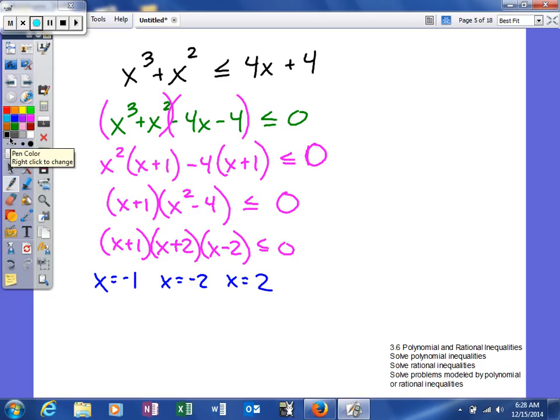Okay. Here's our number line. We're going to have zeros of negative 2, negative 1, and positive 2. That's going to divide our graph into four parts. So left of negative 2, between negative 2 and negative 1, between negative 1 and 2, and then anything larger than 2.